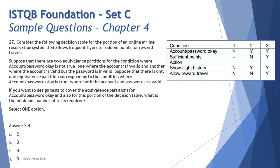So right now what they're telling you is: you see three test cases — one, two, three — but one is broken down into two sub-partitions, making it four partitions in total. If you want to design tests to cover the equivalence partitions for account or password okay and for this portion of the decision table, the minimum number of tests required is straightforward. Case one is broken into two parts: account does not exist is one scenario, and account exists but password is wrong is another.